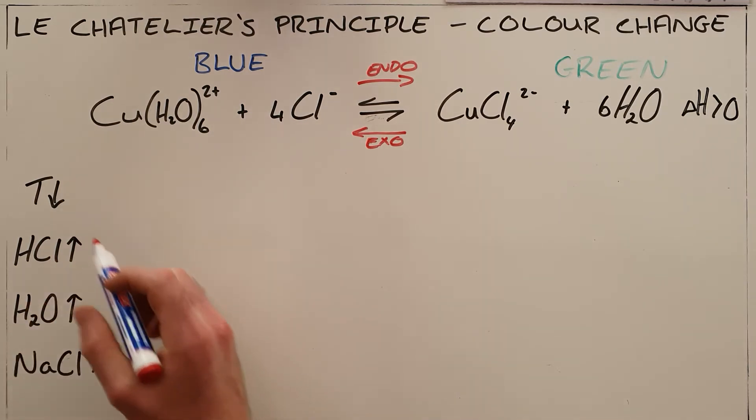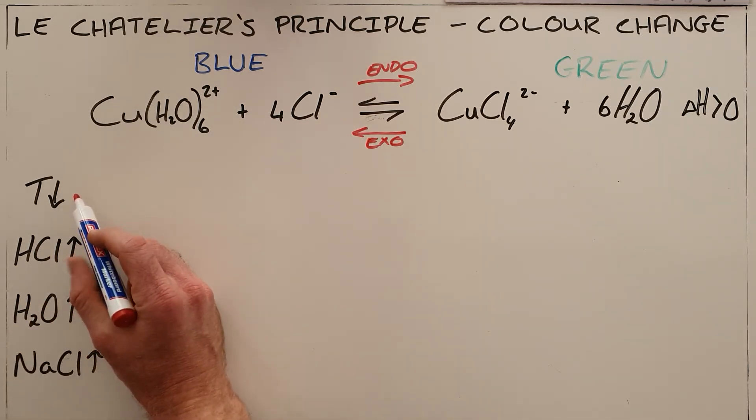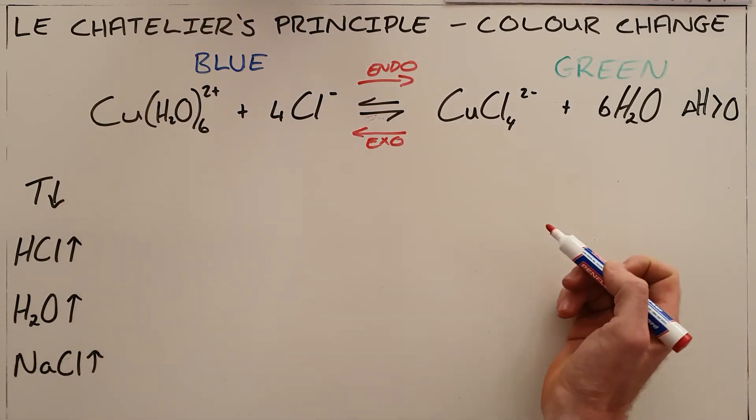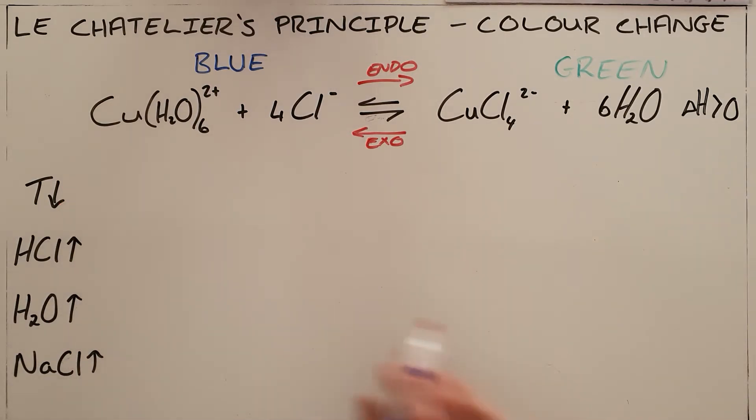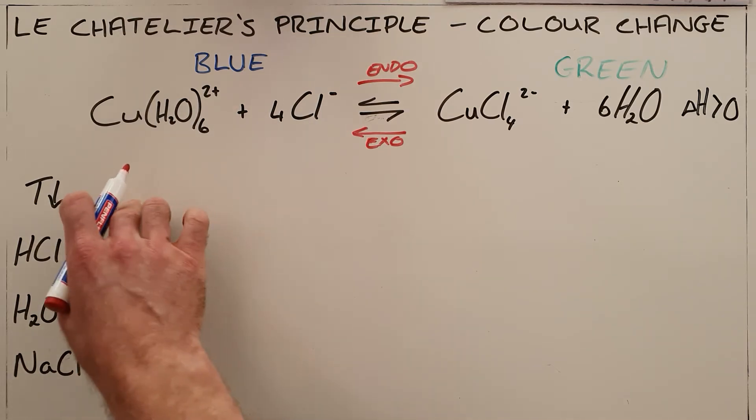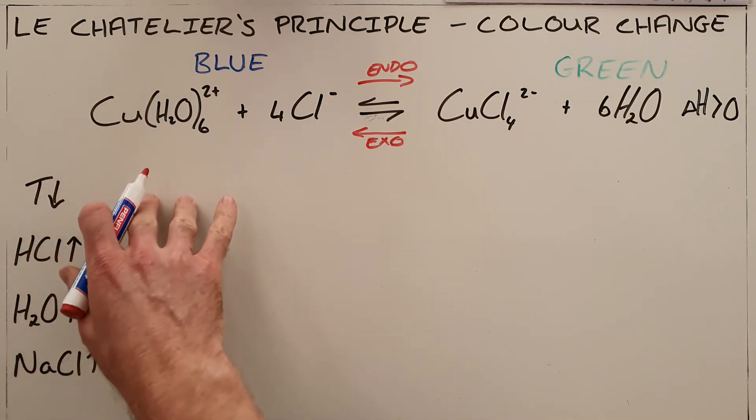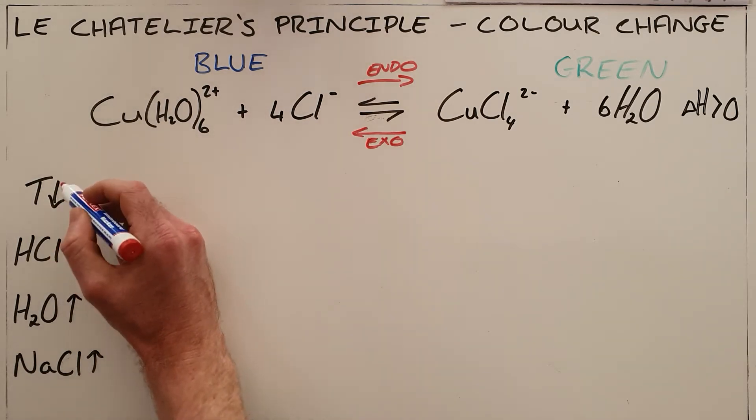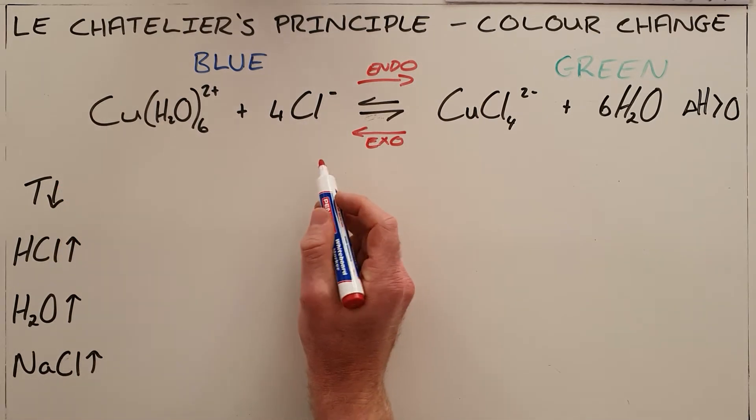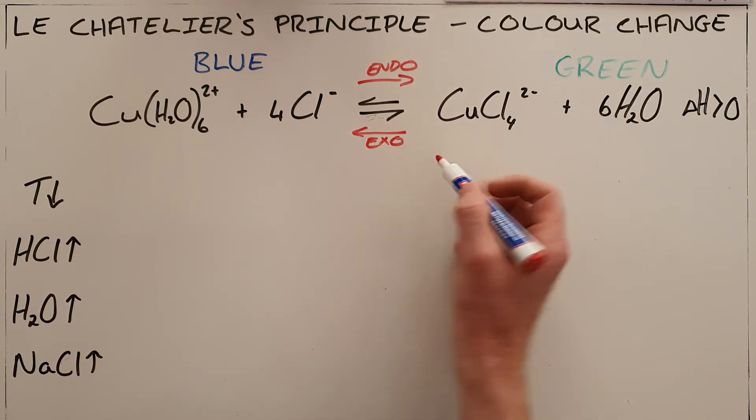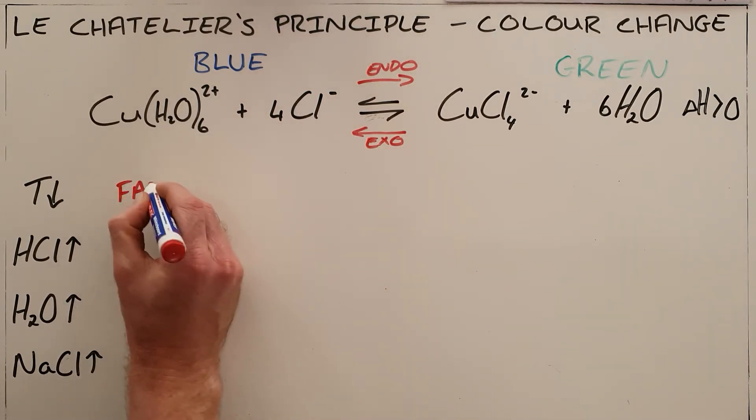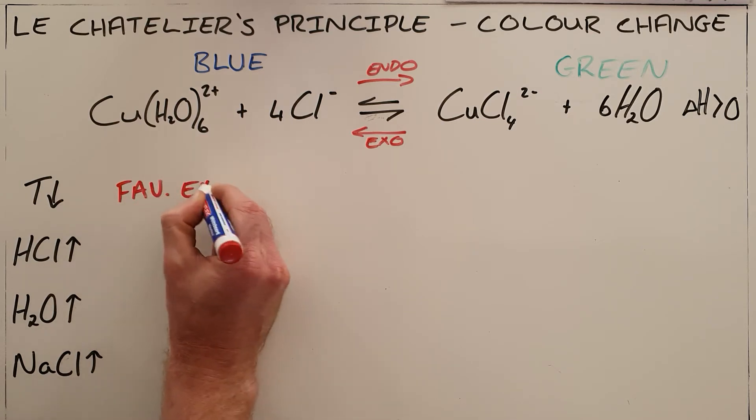So in this example, the first question would say what would happen if the temperature of this reaction were to be decreased. Now we know Le Chatelier's principle says that we are going to try to counter the change that has been made. So the temperature here has been decreased, which means this reaction is going to favor the direction that increases the temperature. That means we are favoring the exothermic reaction.